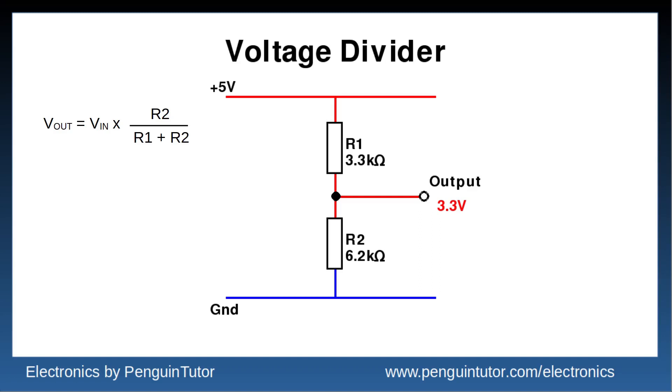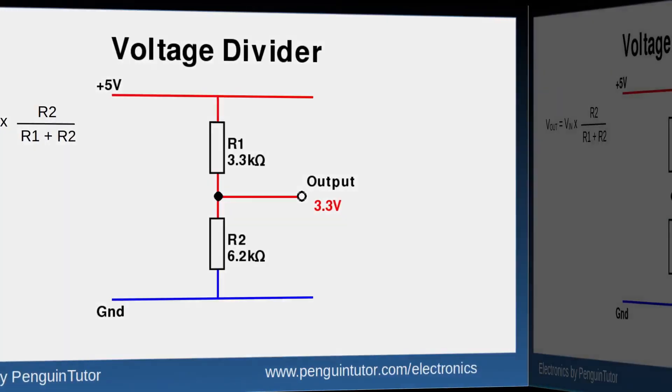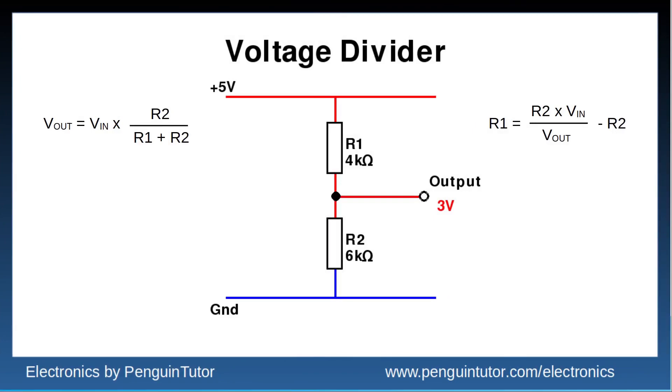Assuming you use 10 kilo ohms, then you can work a ratio of the input to the output voltage, and that can determine the value of R1 based on that. So to keep it simple, I've switched back to the earlier example where the voltage is to be reduced from 5 volts to 3 volts. That means I need a ratio of 3 to 5.